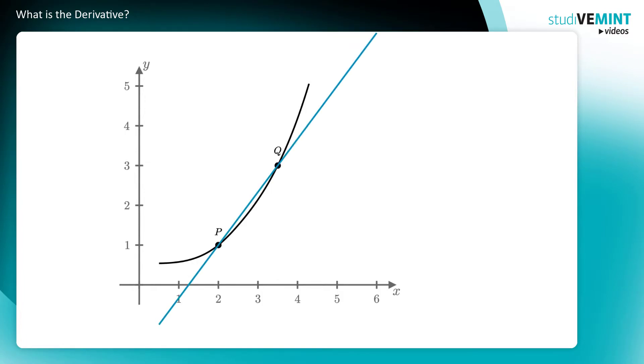Such a line crossing the graph of f in at least two points is called a secant line. The slope of this secant line is the first approximation of the slope of f at p. You can improve this approximation by choosing q closer to p. For this, let q approach p.